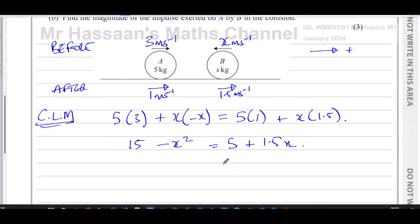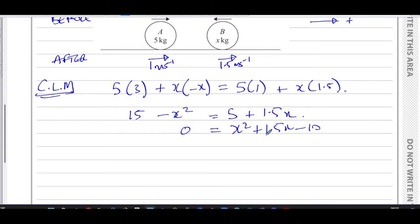This gives 15 minus X squared equals 5 plus 1.5X. So we have a quadratic equation here, X squared and X terms. Let's make it 0 on this side. We're going to add X squared to both sides, we have 1.5X over here, and 5 minus 15, which is negative 10 equals 0. To solve this, I'll get rid of the fraction. If I multiply by 2, this will become 3. So I'll have 2X squared plus 3X minus 20 equals 0.